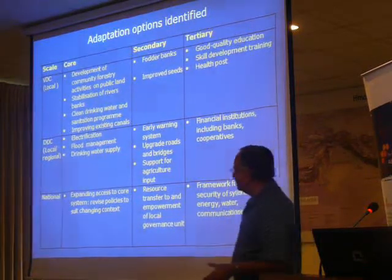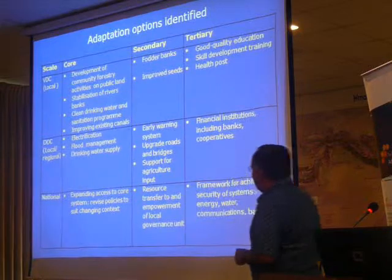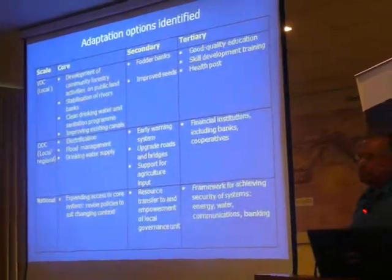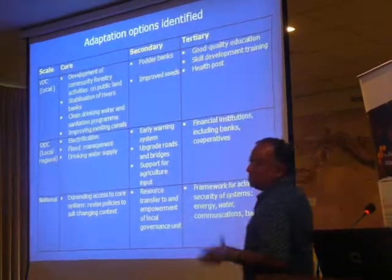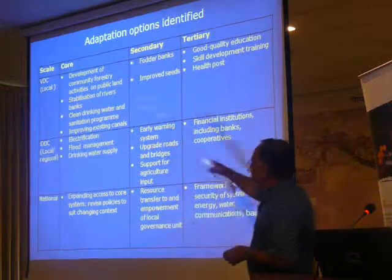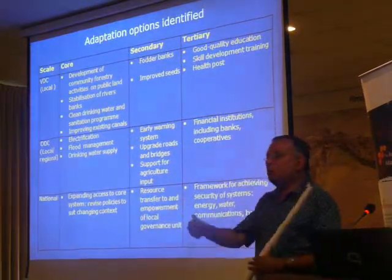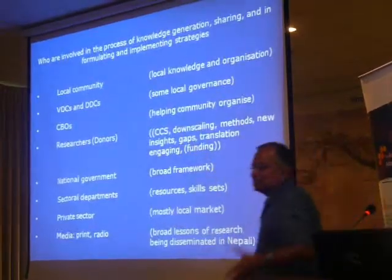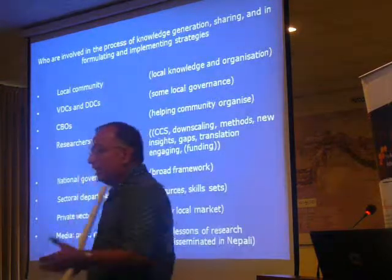They talk about what can happen at the national level — the government needs to create an enabling framework, revisiting and reformulating policy to suit the changing context, transferring more resources from the center to the local level, and empowering them with power and authority. Then there are enabling systems: providing access to energy, water, communication, banking, and so on. You could use simple qualitative cost-benefit methods, prioritize these options, and say we do this number one, number two, number three. You could also identify who does what — what will be done at the community level, at the VDC level, at the regional government level, and at the national government level.